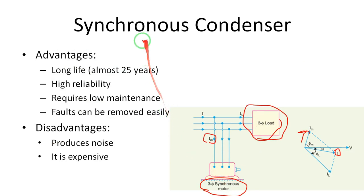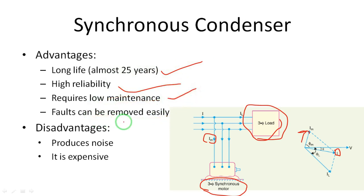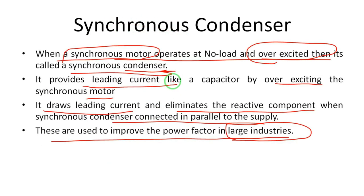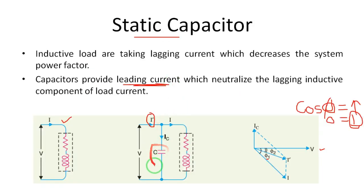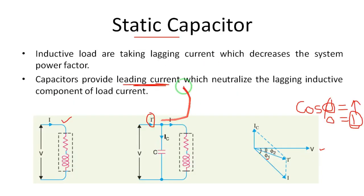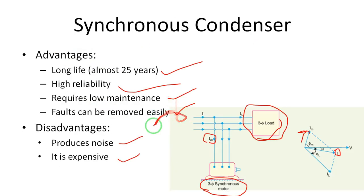Advantages of the synchronous condenser method: long life of approximately 25 years, high reliability, low maintenance, and faults can be removed easily. Disadvantages: it produces noise because it is a rotating machine, and it is expensive due to its machine cost. Comparing the two methods: the static capacitor method uses a simple capacitor in parallel to the load, suitable for small appliances; the synchronous condenser method is used for large industries.